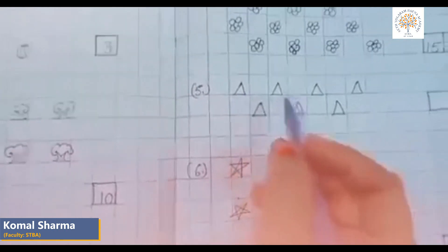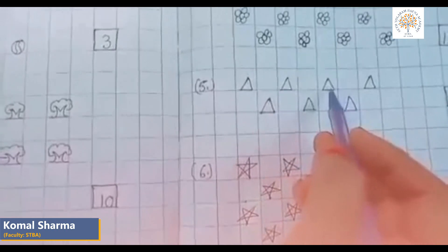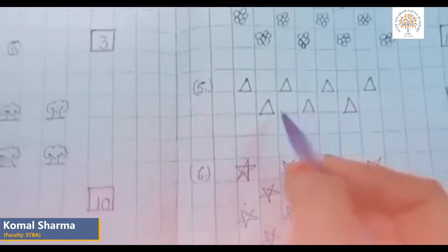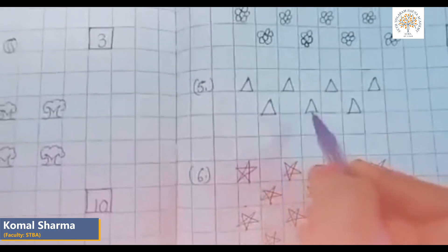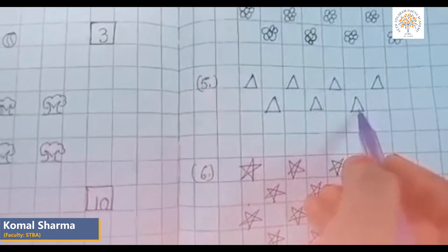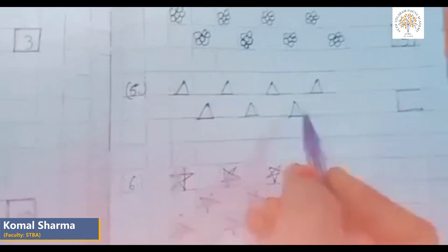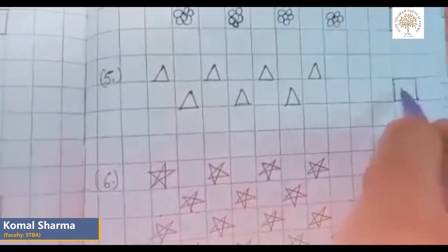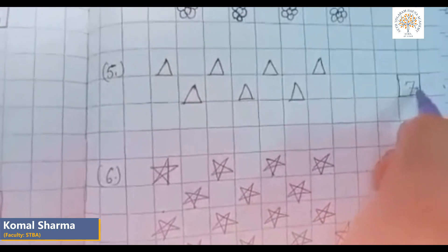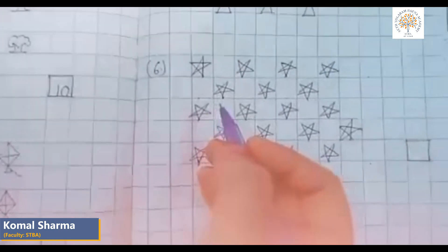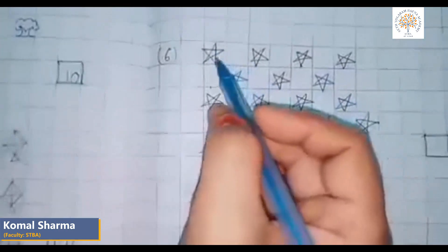Let us count shapes of triangles: one, two, three, four, five, six, seven. There are seven triangles. So we will write seven in the box. Now count the stars. How many stars are there?